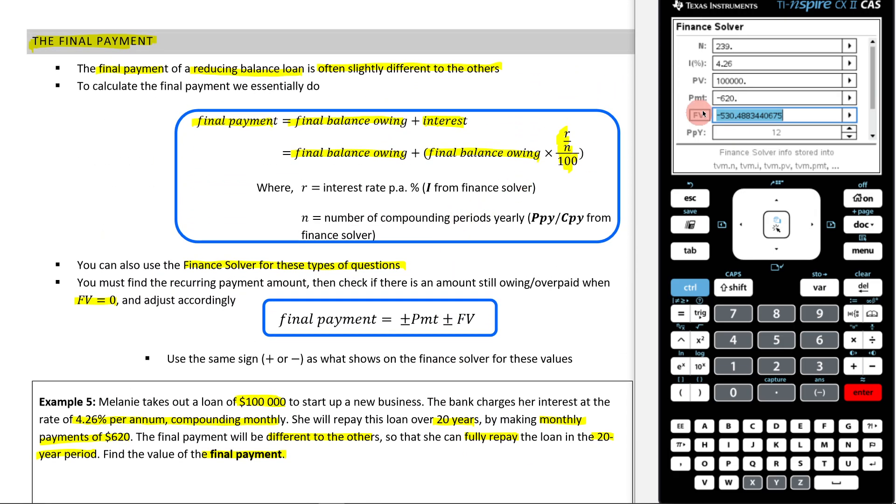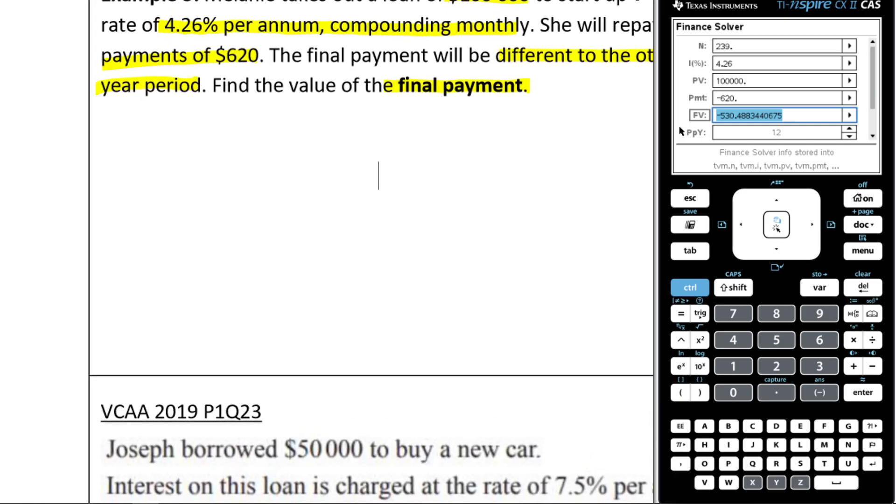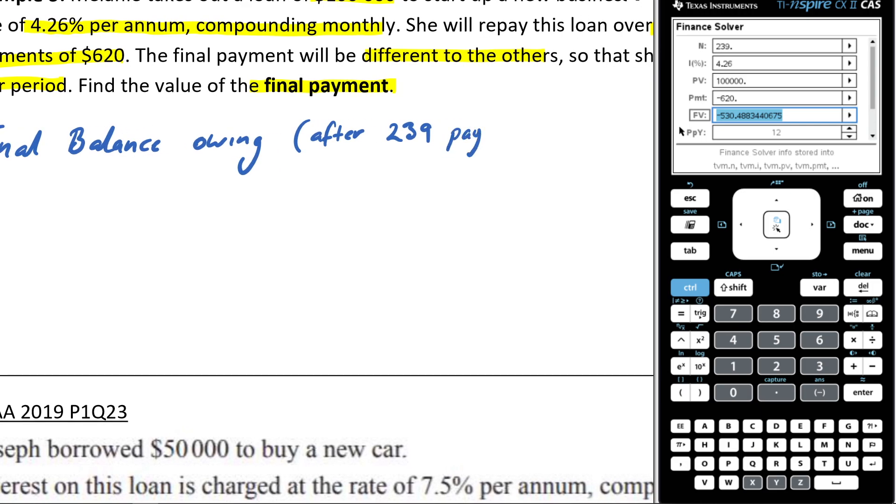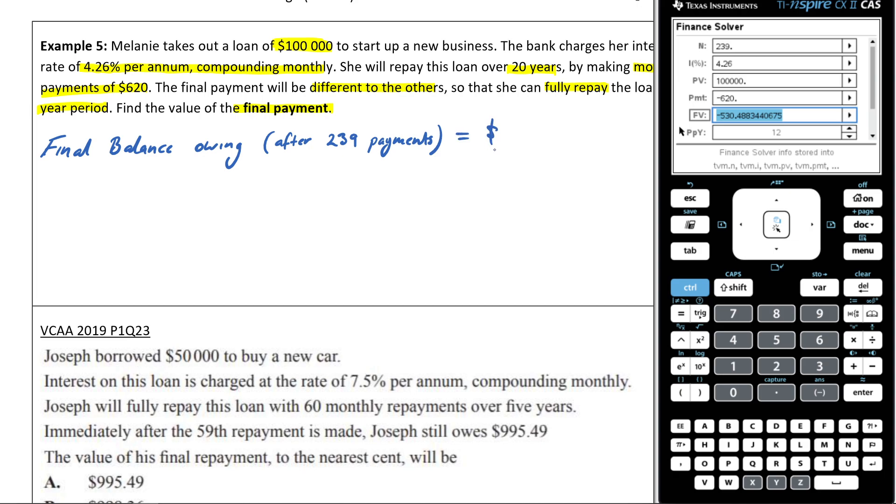So, just to reiterate here, what you're seeing here, this $530, is my final balance owing. So, what we have to do now to figure out how much my final payment has to be, is we simply have to go: I know I have to give them $530, but then I also have to add on the interest that is accrued on this $530 in this last month. So, let's just write this down to be nice and neat here. My final balance owing, after 239 payments, so one less than it fully being paid off, is going to be equal to $530.488 dot dot dot, and I'm going to leave it like that. I'm not going to round it yet.